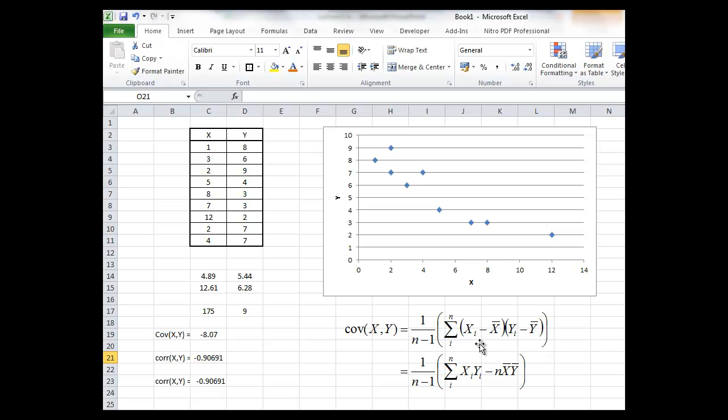Now this requires quite a lengthy calculation and you can actually calculate the equivalent and identically equal statistic using the formula at the bottom here which just requires the sum of the x's times the y's less n the sample size times the mean of x times the mean of y. So we'll apply this formula.